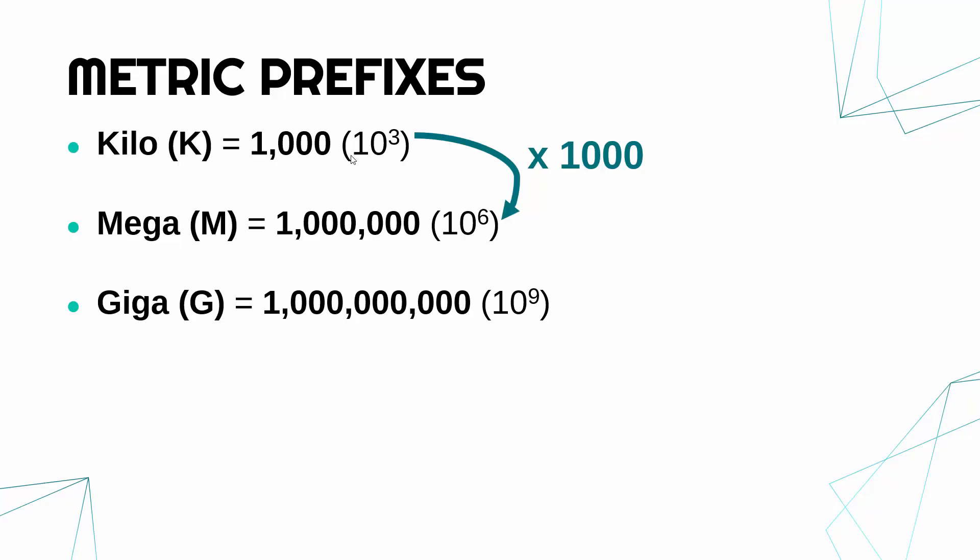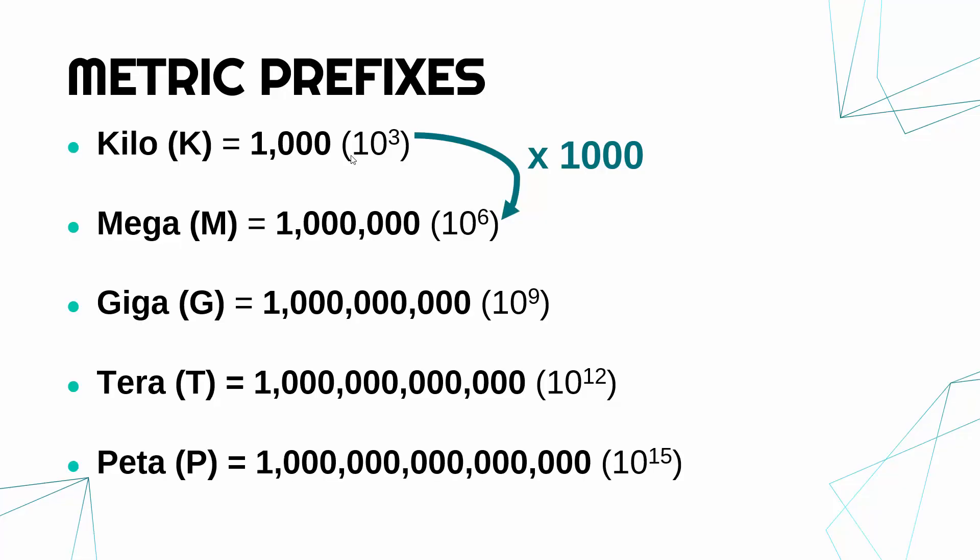And then tera is the next one. Tera is a trillion, which is 10 to the power 12. And peta is a quadrillion, which is 10 to the power 15. These powers are adding three each time because we're timesing by a thousand each time. A thousand is 10 to the power 3.